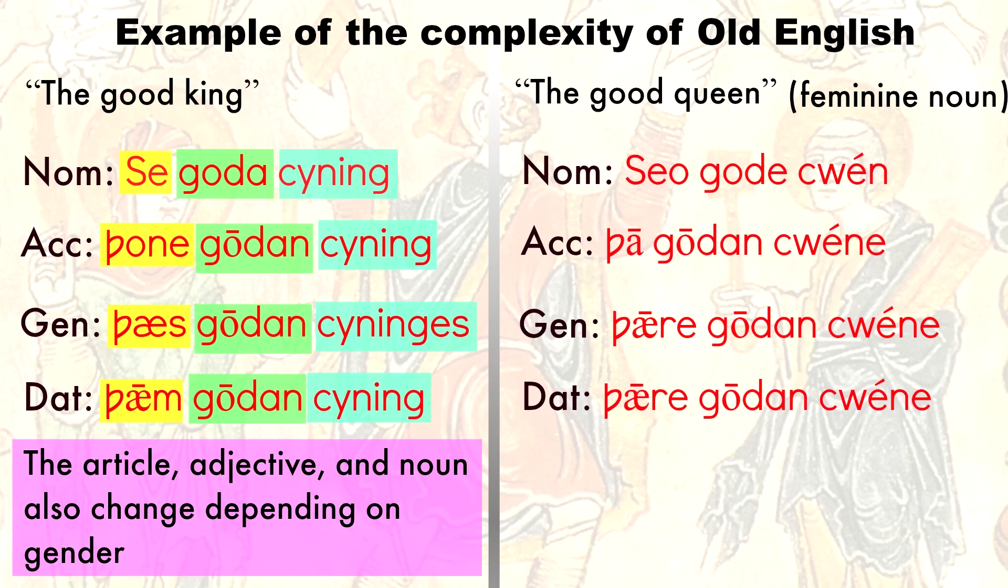Notice the different feminine form of the definite article and the adjective. This is just an example of the grammatical complexity of Old English, so you can imagine how much it became simplified.